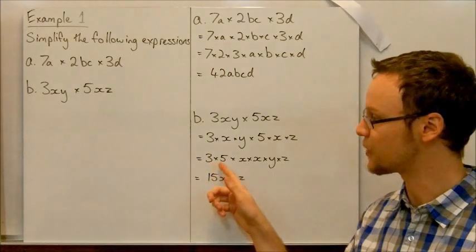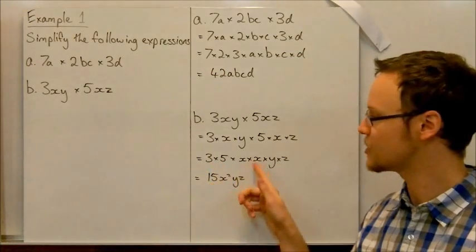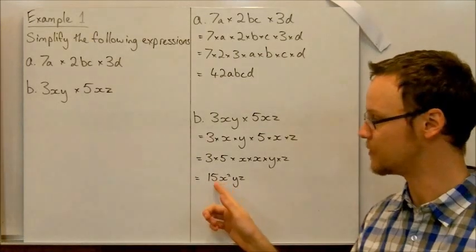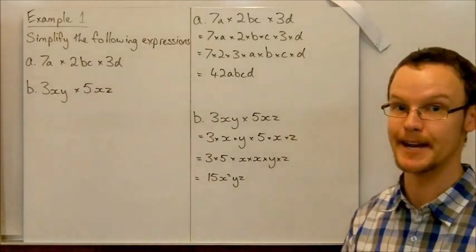So that's where our answer is. We've done the 3 times 5 is 15, x times x is x squared, y, z. We're left with 15x squared yz.